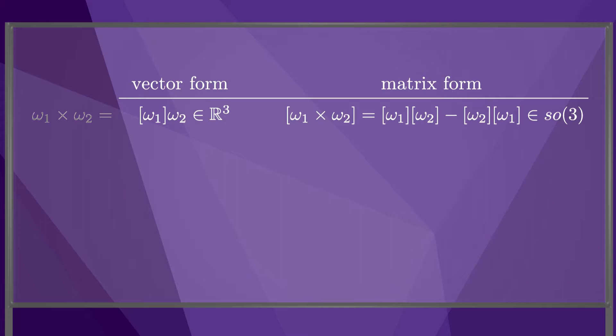For 6-dimensional twists, our analogy to the cross-product is bracket V1 times bracket V2 minus bracket V2 times bracket V1, a 4x4 matrix in little SE3.